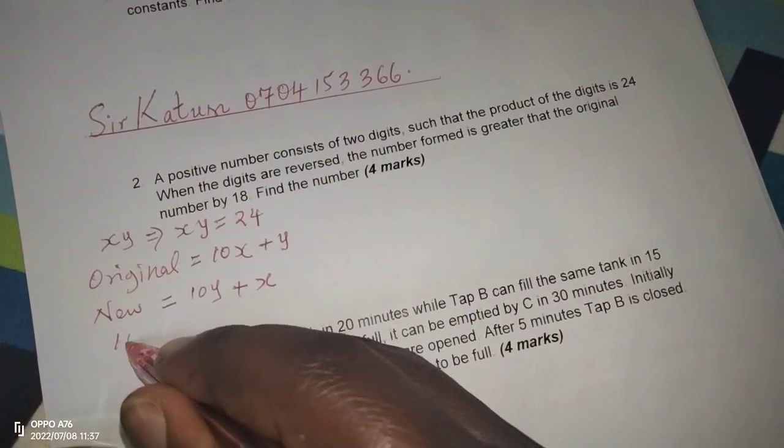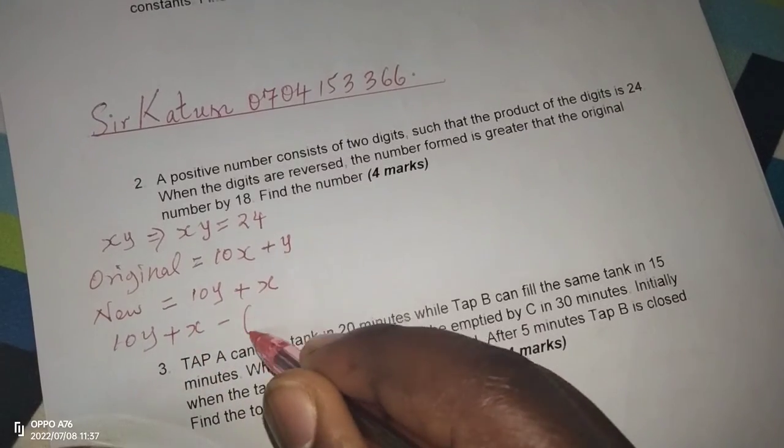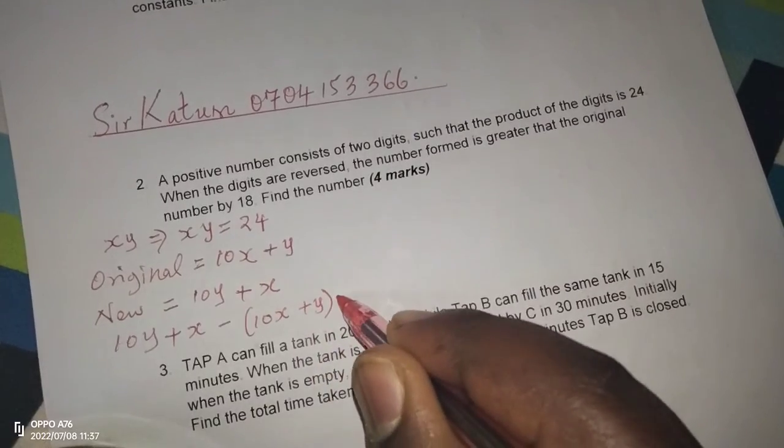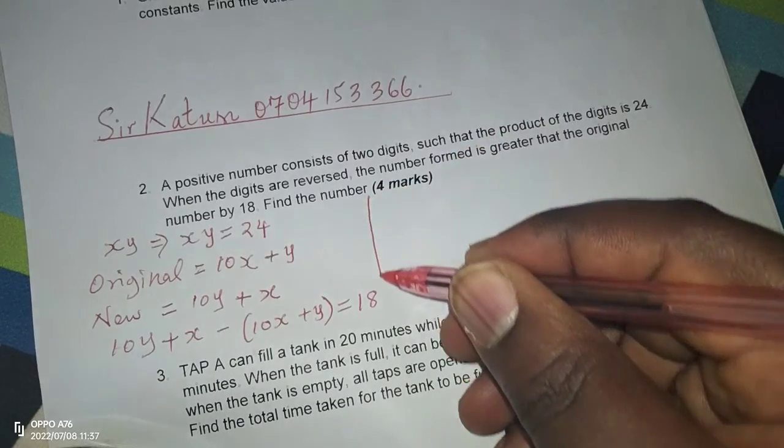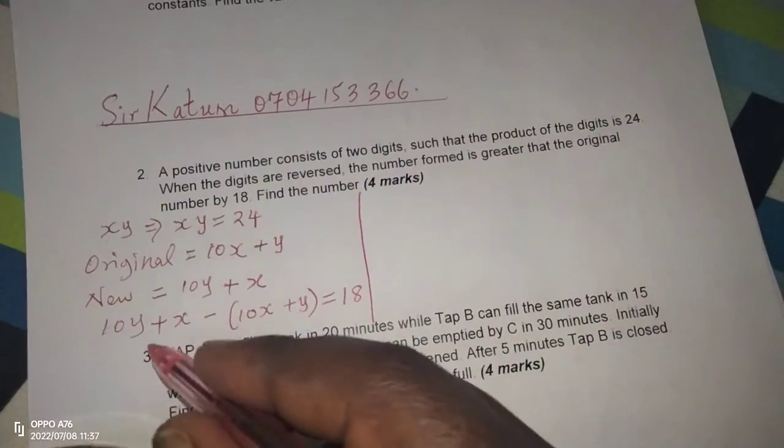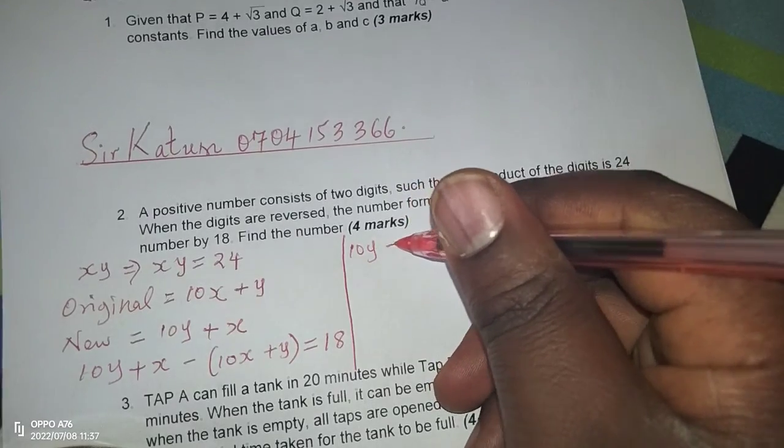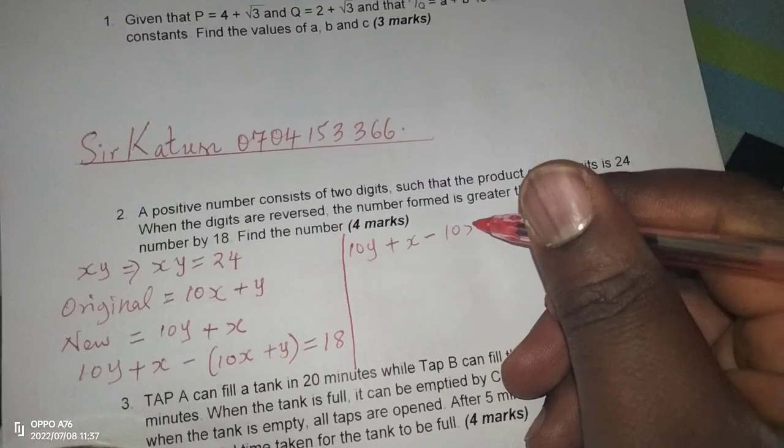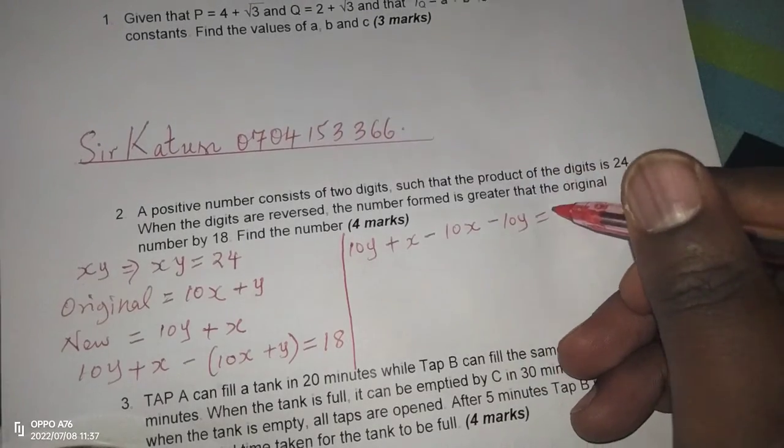The new number formed, which is 10Y plus X, when we subtract the original, 10X plus Y, we should get a difference of 18. So this means we can have 10Y plus X minus 10X minus Y equals 18.